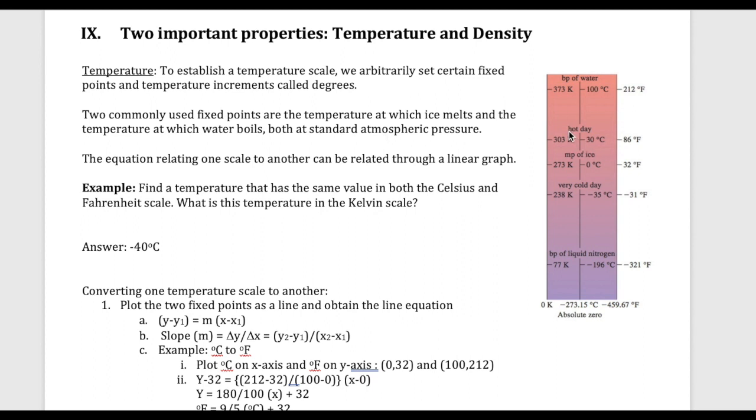So a hot day would be 86 degrees Fahrenheit or 30 degrees Celsius, or a very cold day would be something like minus 31 degrees Fahrenheit.